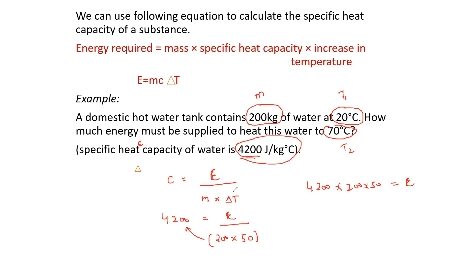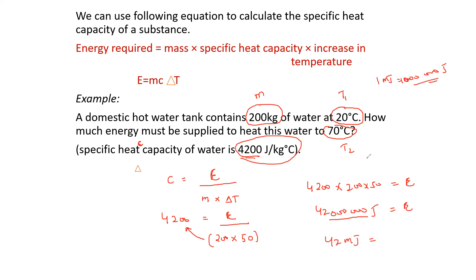Rearranging, energy equals 4200 multiplied by 200 multiplied by 50. The final answer is 42 million joules, which is 42 megajoules, since one megajoule equals 10^6 joules. You can also write this in scientific notation as 42 times 10^6 joules — that is also the correct way.